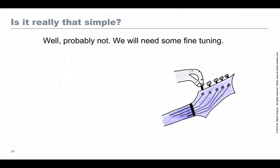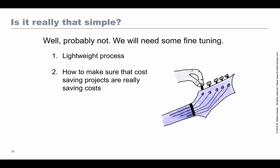Is it really that simple — gathering demand, putting it into a project backlog, grooming that backlog so the most valuable projects are at the top, and then implementing from the top? Probably not. We will need some fine-tuning. Let me tell you about two extensions we implemented: first, a lightweight process for certain projects, and second, how to make sure that cost-saving projects are really saving costs.